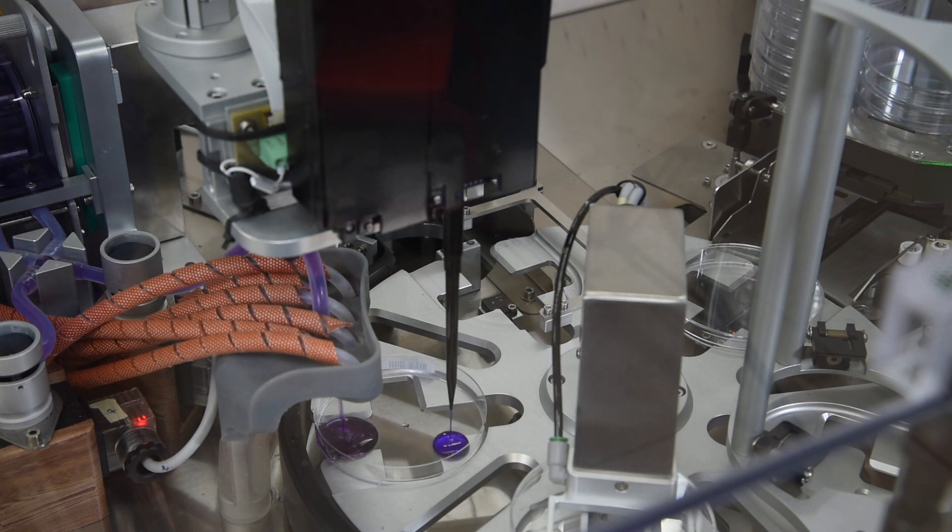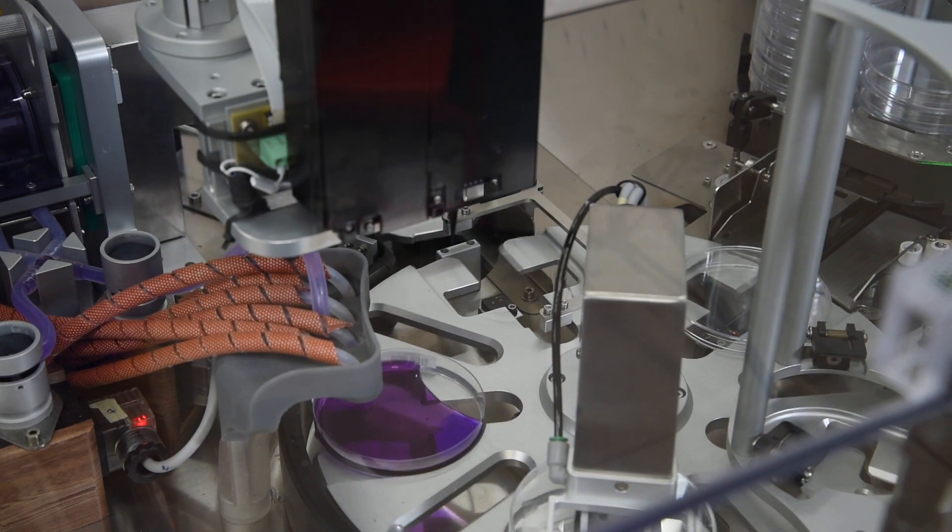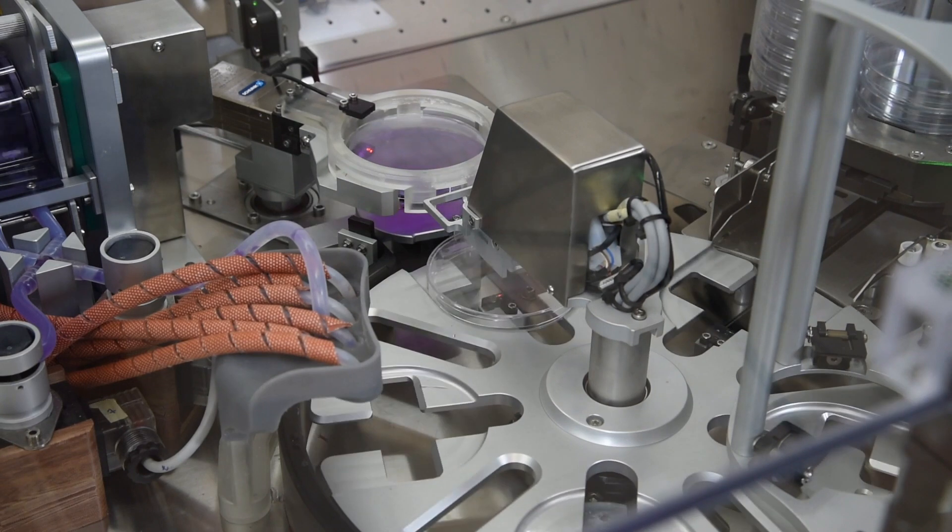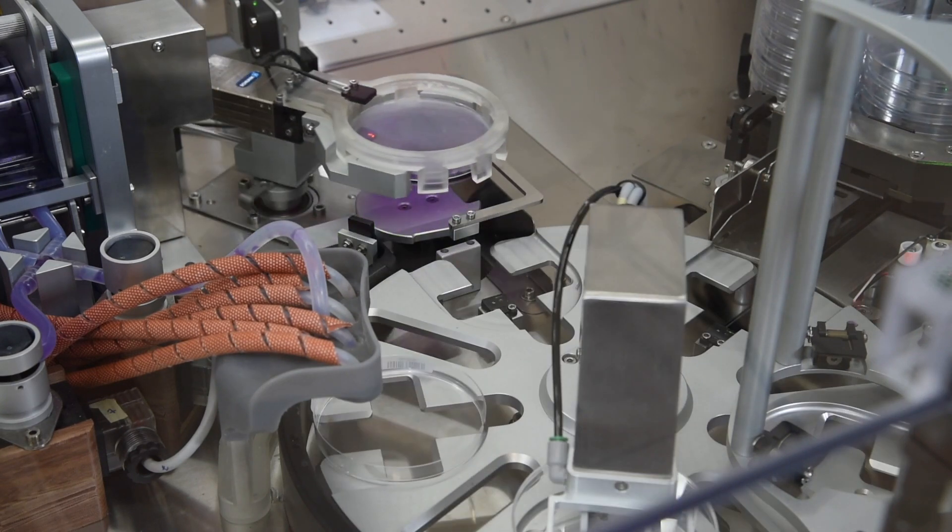When the pour plating option is selected, the instrument takes a precise sample aliquot and dispenses it into the empty plate, and molten agar is added. After sample and agar are dispensed, the plate is lifted into the orbital mixer and gently homogenized.